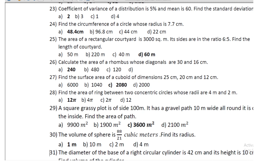The surface area of the cuboid is 2080 cm². Question 26: find the area of the ring between two concentric circles with radii 4 m and 2 m; the area is 12π. Question 27: a grassy plot of side 100 m has a gravel path 10 m wide all round on the inside.